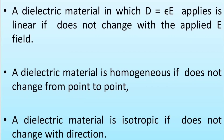To summarize: a dielectric material is linear if ε does not change with the applied electric field; it is homogeneous if ε does not change from point to point; and it is isotropic if ε does not change with direction. All three conclusive points depend on the permittivity value ε.